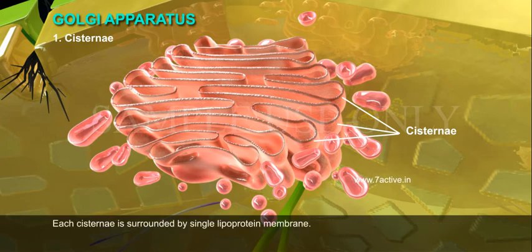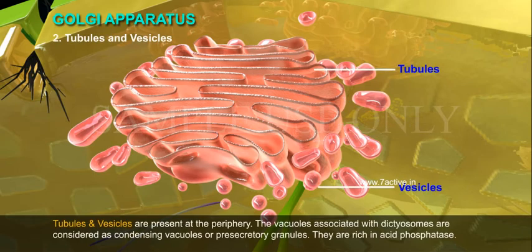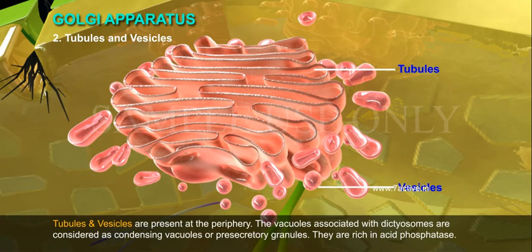Each cisterna is surrounded by a single lipoprotein membrane. Tubules and vesicles are present at the periphery. The vacuoles associated with dictyosomes are considered as condensing vacuoles or pre-secretory granules.